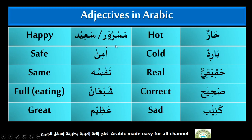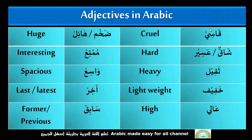Kaim — Sad. Masroorun, Saeed — Happy. Amin — Safe. Nafsuhu — Same. Shabahan — Full. Azim — Great. Khaasi — Cruel. Shabah, Asir — Hard. Taqilun — Heavy. Khafifun — Lightweight. Aali — High. Zakhmun — Huge.